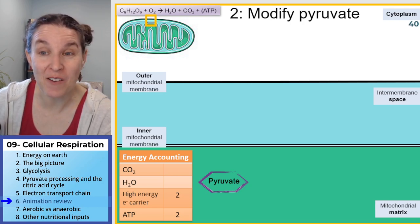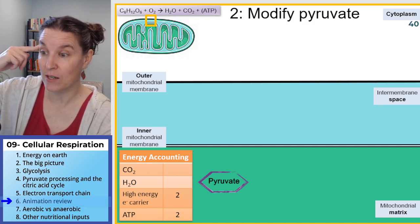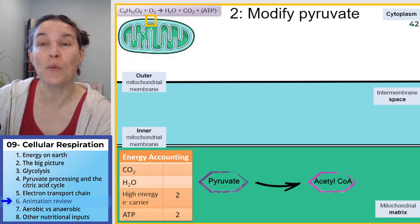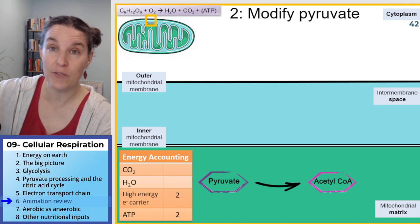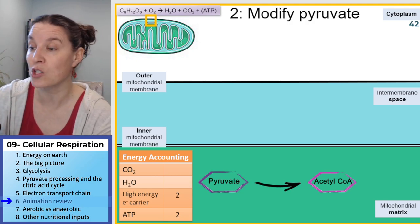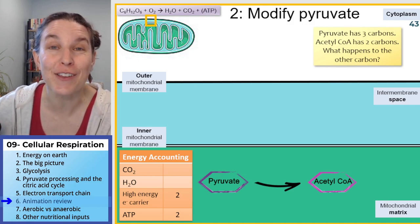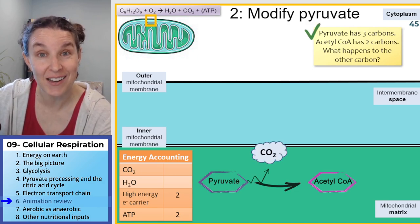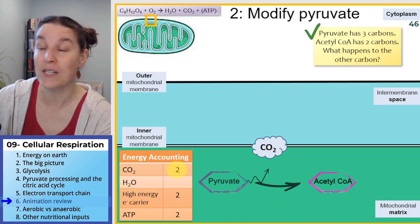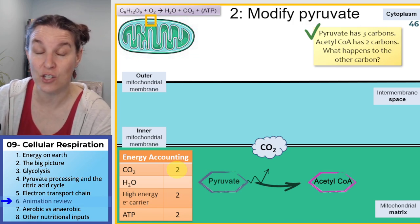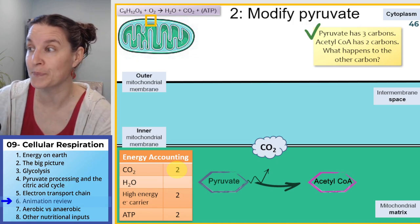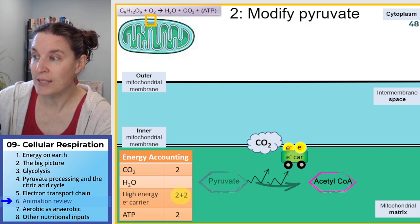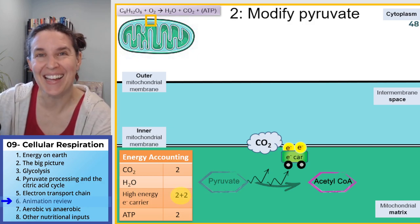Step two: we have to modify the pyruvate. We're going to take pyruvate and produce acetyl-CoA. Remember, pyruvate has three carbons and acetyl-CoA has two. What happened to the other carbon? It becomes carbon dioxide — and this happens twice, so we end up with two carbon dioxides, which we've just added into our energy accounting table. What else do we get out of this pyruvate modification process? Two high-energy electron carriers.